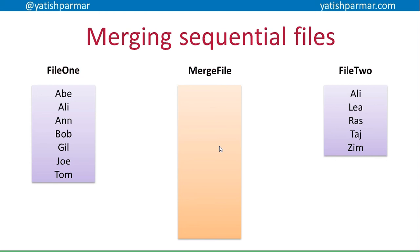Here we've got file one and file two, both of them ordered. My assumption here is also that the key field is the first name. So I'm going to compare the first items in both data files. Abe works out to be smaller than Ali, therefore Abe is the item that gets copied over to my new merge file. I then update my pointer to look at the next item. Now here I've got a bit of a problem — Ali equals Ali.